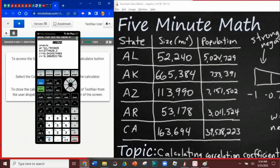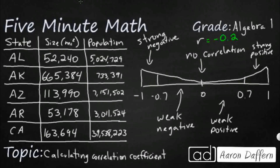Now we're looking right down at the very bottom at that r. And we actually have a negative 0.2. So let's see what that means — a negative 0.2. We have an r value of negative 0.2, which means we have a weak negative correlation. That's going to fall right around there.